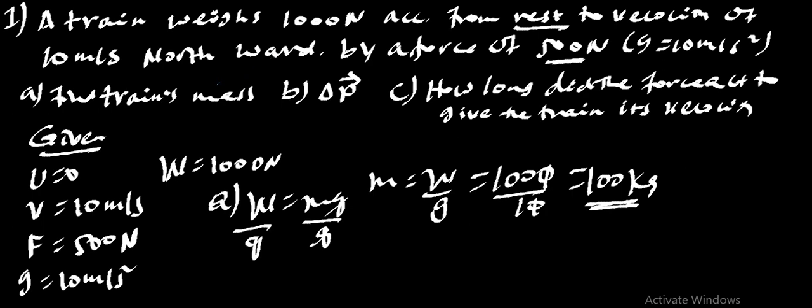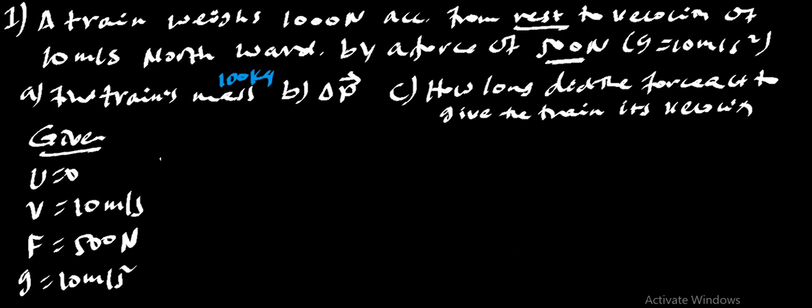So, number B, let's calculate the change in momentum. Change in momentum is equal to change in P is equal to mv minus mu. Mass is constant, which is 100,